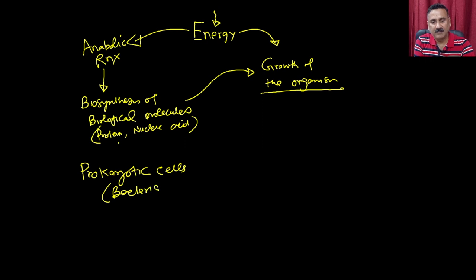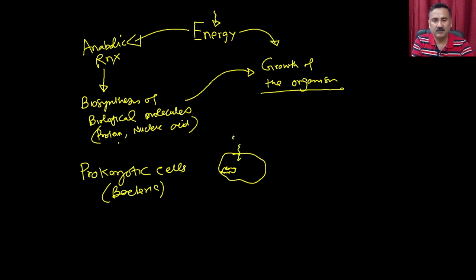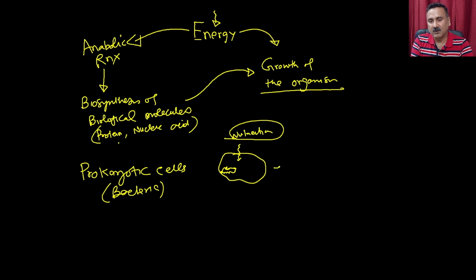If you take a bacterium, it has a chromosome or nuclear content. When it acquires nutrition from outside, it takes up that nutrition and enlarges in size — synthesizing lipid molecules, protein molecules, and nucleic acids — thereby increasing the size of the cell.